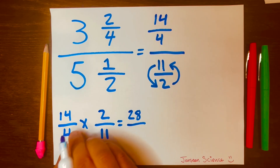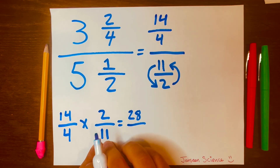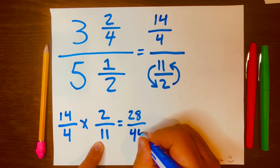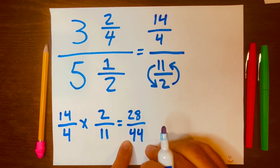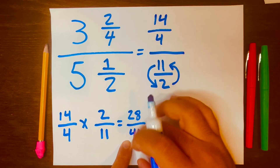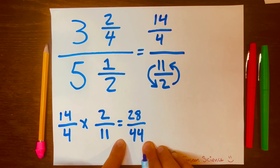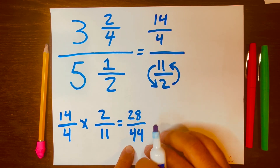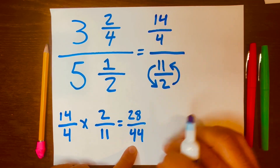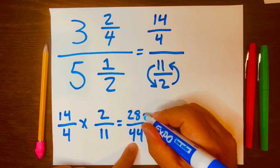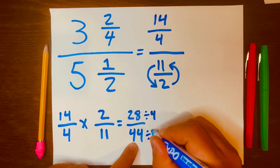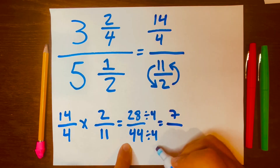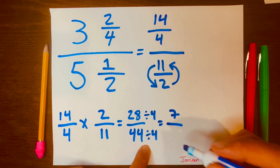Four times eleven is forty-four, giving us twenty-eight over forty-four. We need to simplify this to its lowest terms. Both numbers are even, so we can divide by four. Twenty-eight divided by four is seven, and forty-four divided by four is eleven.